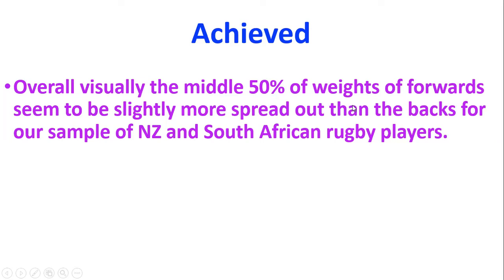The achieved answer is just being able to say: overall, the middle 50% of the weights of forwards is slightly more spread out than the middle 50% of the weights of the backs, for our sample of New Zealand and South African rugby players.